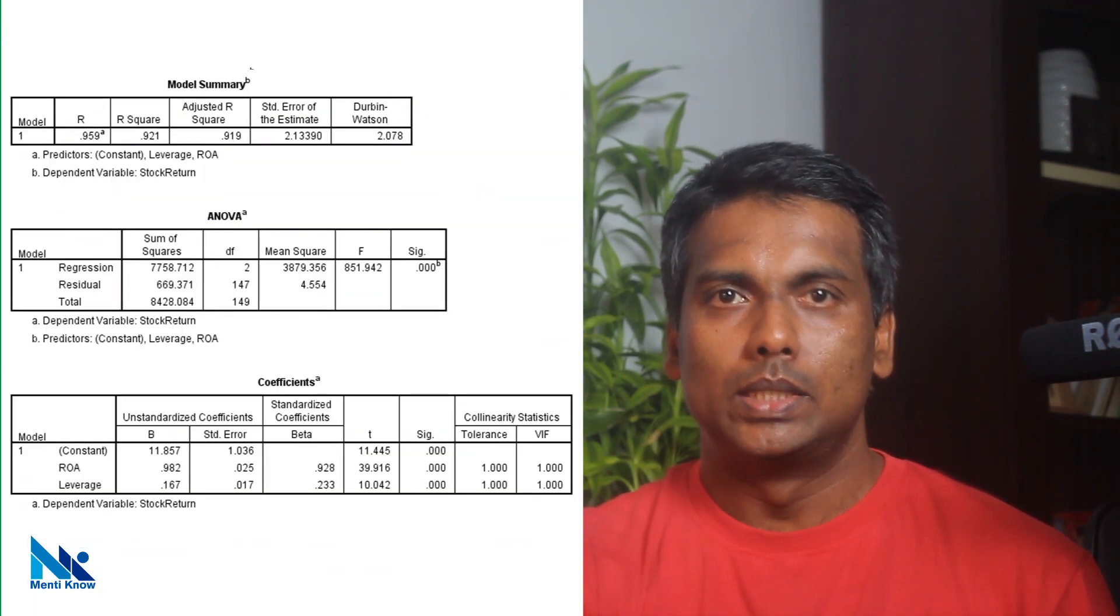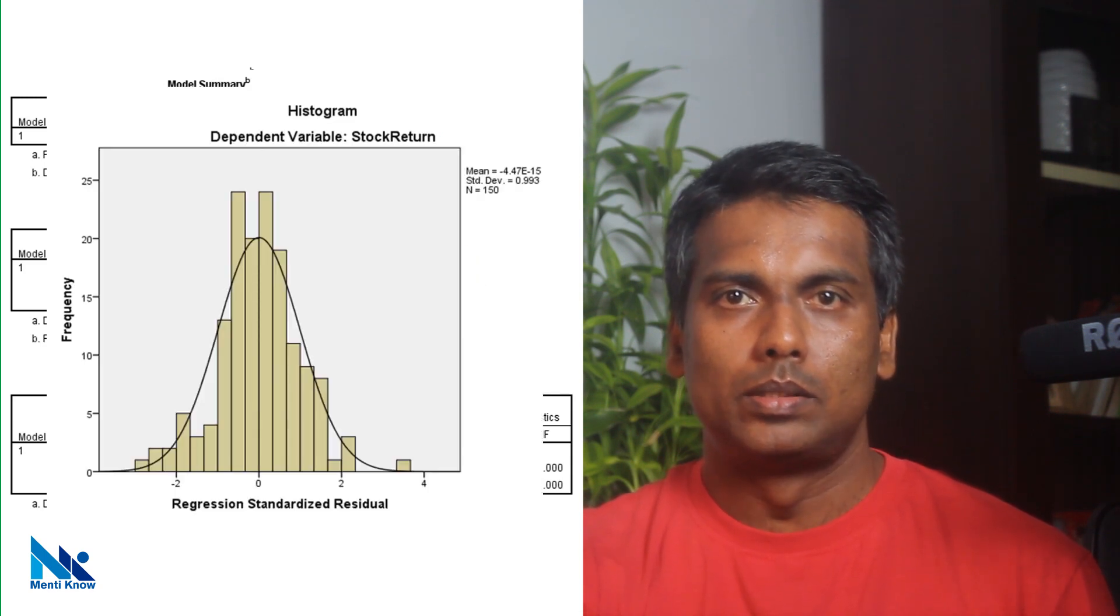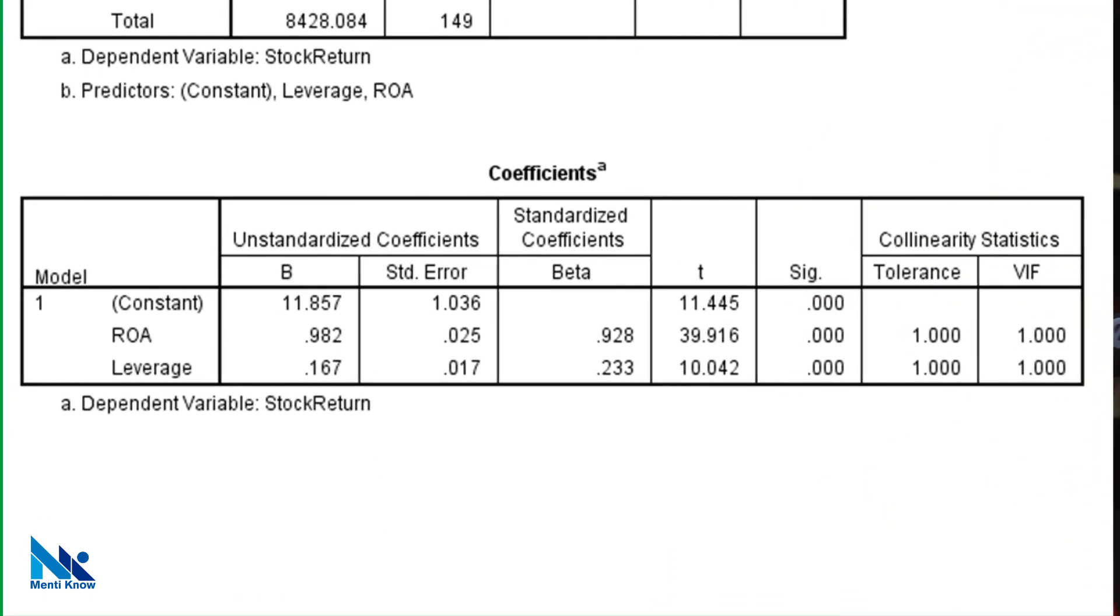Now we can see that Durbin and Watson's statistic is OK. Model is statistically significant. Residuals are normally distributed. All VIF values are below 5 indicating the absence of multicollinearity issues. This implies that our results are reliable this time. Here we can see that both coefficients are statistically significant and have expected signs as well.